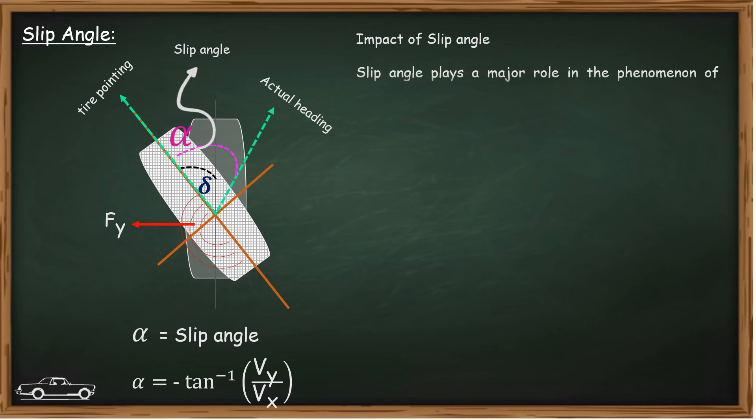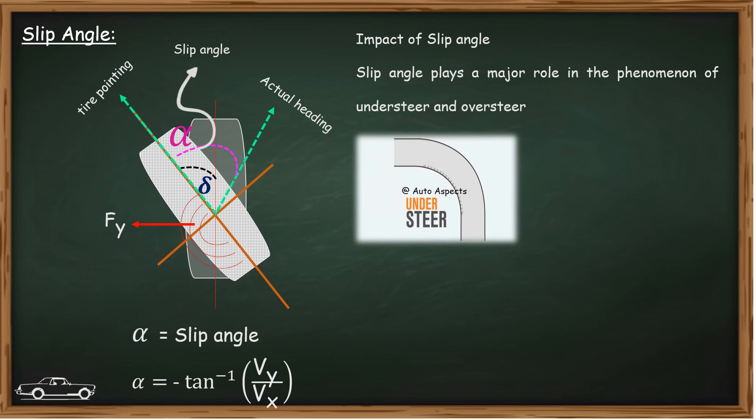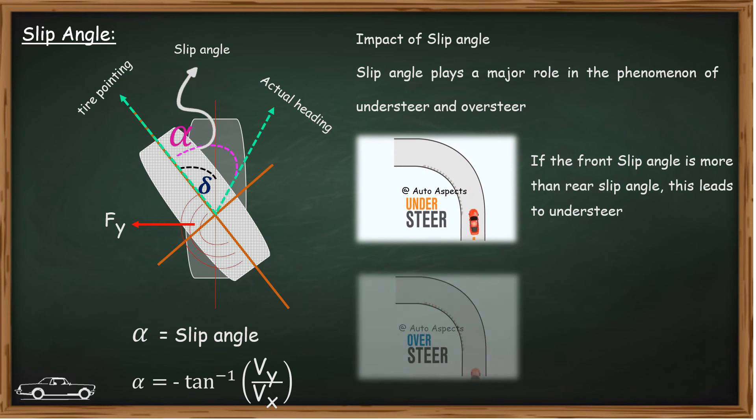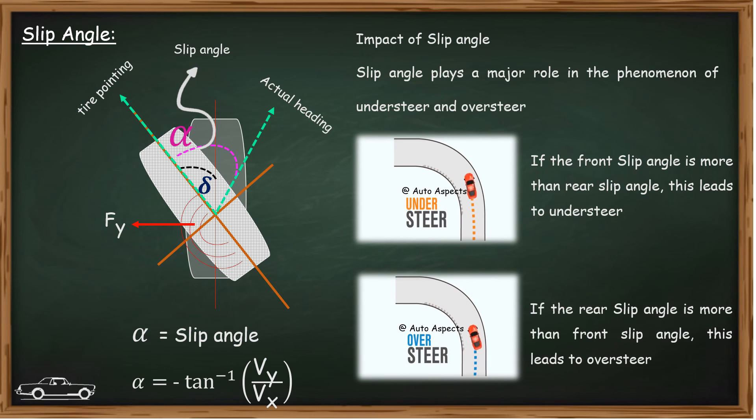So why are we more concerned about the slip angle? It is mainly due to the understeer and oversteer behavior. If the front slip angle is more than rear slip angle, then the vehicle exhibits understeer behavior. At the same time, if the rear slip angle is more than the front slip angle, then the vehicle exhibits oversteer behavior.